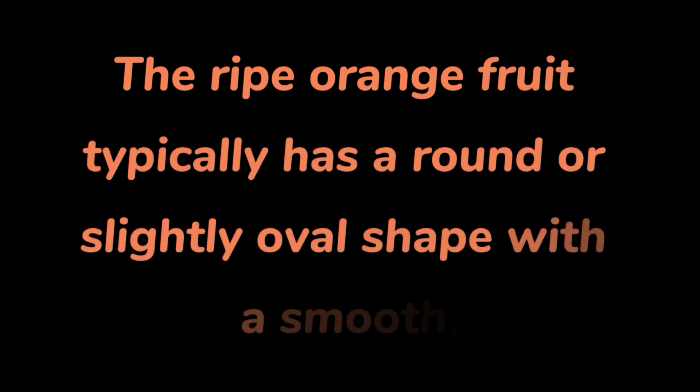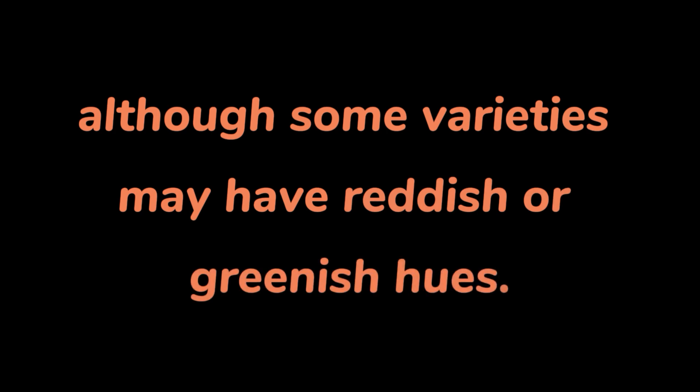Answer. The ripe orange fruit typically has a round or slightly oval shape with a smooth, waxy skin. It is usually orange or yellow-orange in color, although some varieties may have reddish or greenish hues. The fruit may have a dimpled texture on the skin and a small depression at the stem end.